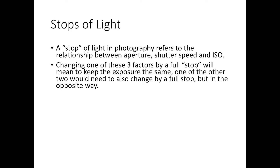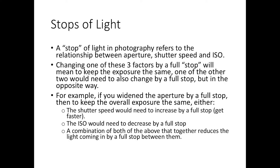If we change one of these three factors by a full stop, then to keep the same exposure — without the image getting brighter or darker — one of the other two would need to change by a full stop in the opposite direction. For example, if we widen the aperture by a full stop, we've let more light in, so the image will get brighter. The camera will then either increase the shutter speed by a full stop to make the shutter go faster, or decrease the ISO by a full stop to make the sensor less sensitive to light — or a slight combination of both, such as changing ISO by a third of a stop and shutter speed by two-thirds of a stop, so overall it's changed by a full stop.